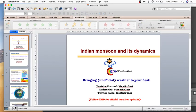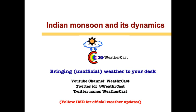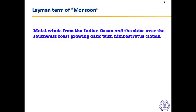Hello and welcome to my YouTube channel. Today's educational video will be on Indian monsoon and its dynamics. Before getting into any technical aspect, there's one slide which defines the monsoon in layman language — it is nothing but the moist winds that originate from the Indian Ocean and travel across the Indian subcontinent, bringing cloudy skies mostly along the southwest coast, sometimes the interior, and sometimes the east coast. The skyline is very thick with nimbostratus clouds.